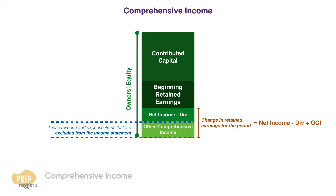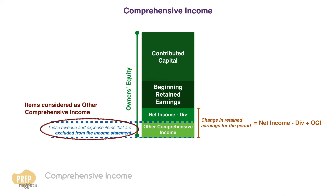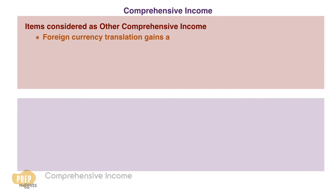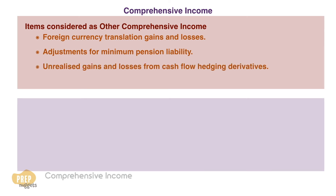There are four main types of items that are considered other comprehensive income: foreign currency translation gains and losses; adjustments for minimum pension liability; unrealised gains and losses from cash flow hedging derivatives; and unrealised gains and losses from available for sale securities.